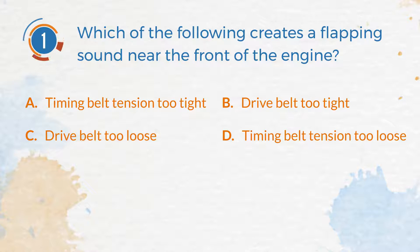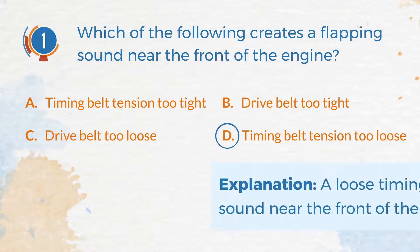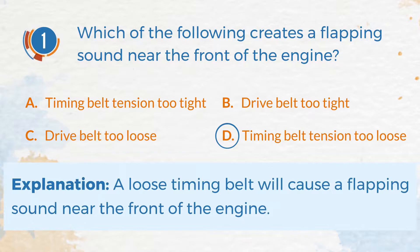The correct answer is D. Timing belt tension too loose. Explanation: A loose timing belt will cause a flapping sound near the front of the engine.